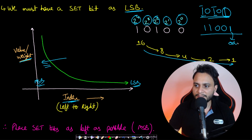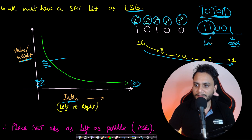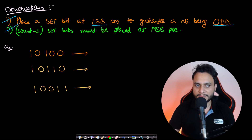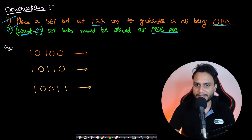The set bit at the end guarantees that the number is odd, and placing all remaining set bits at the leftmost positions guarantees the number is as large as possible. So the two key points are: first, place a set bit at the least significant bit position to guarantee the number is odd; second, if the total count of set bits is 'count', place count minus one set bits at the most significant positions.